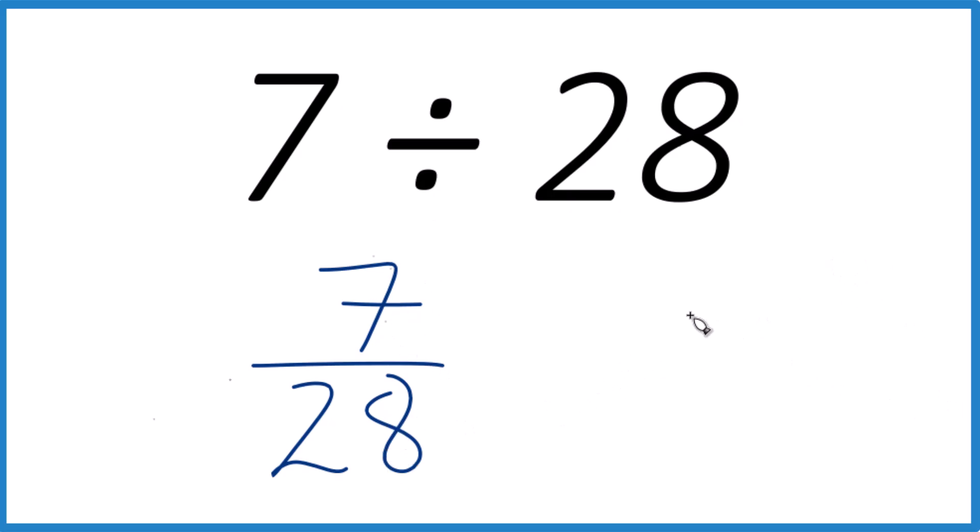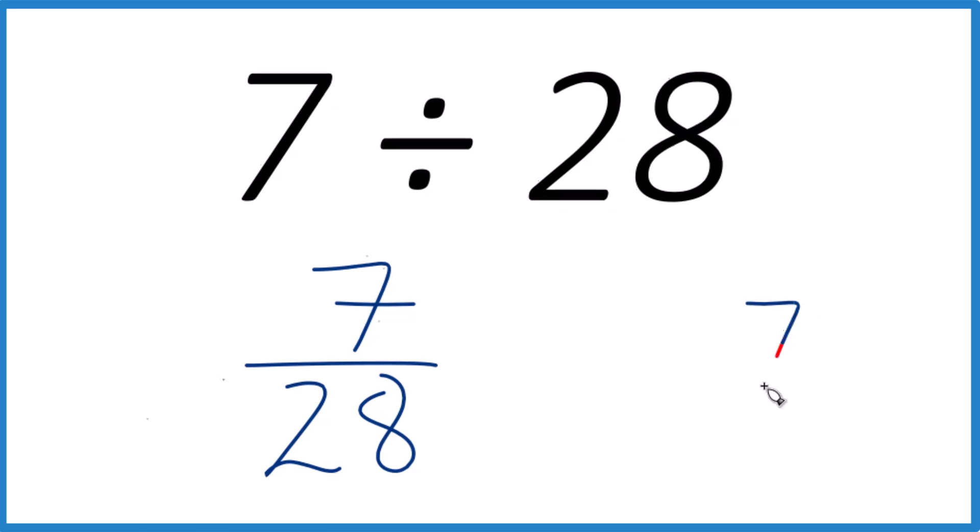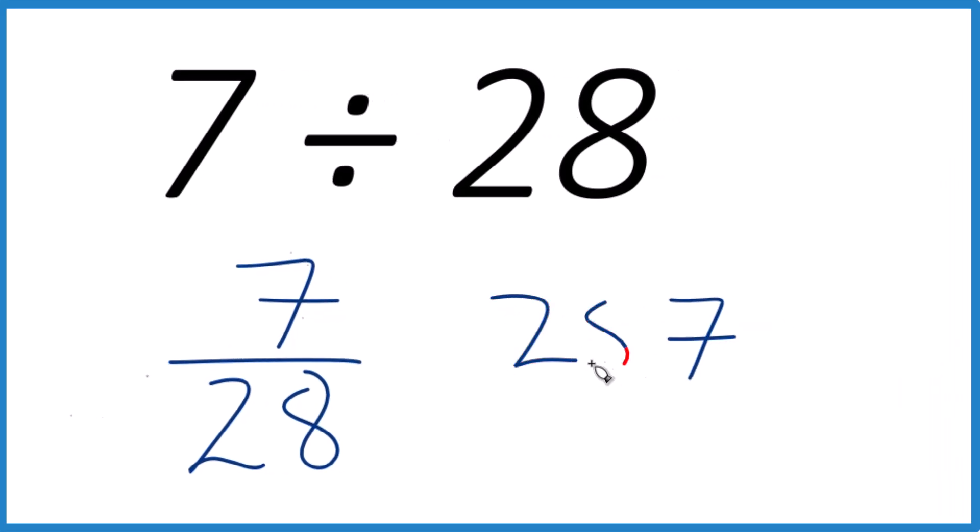So here's how we can do this. We can take our 7 here, see how many times 28 goes into 7. So it does go into 7, but let's put a decimal point and a 0 here. And as long as we put a decimal point up here, we can consider this to be 70.